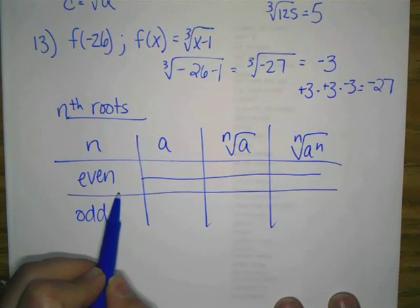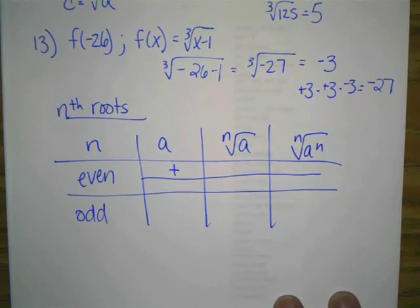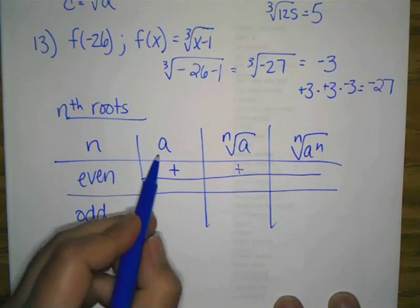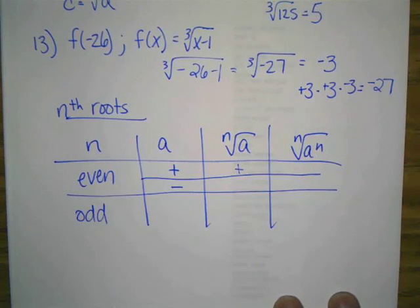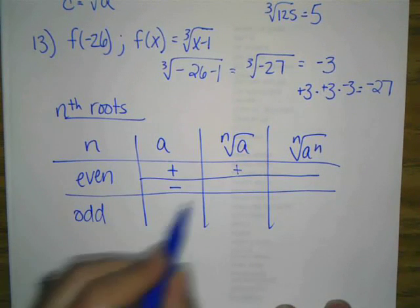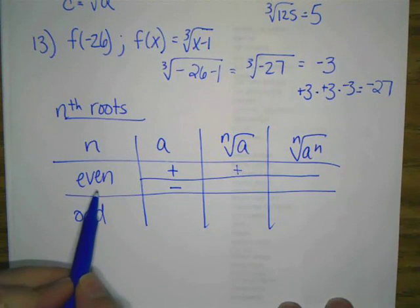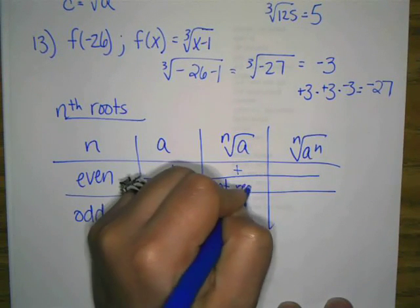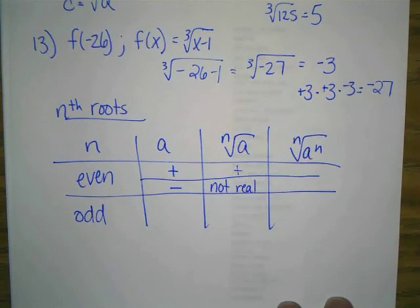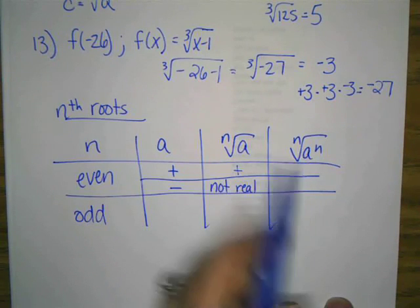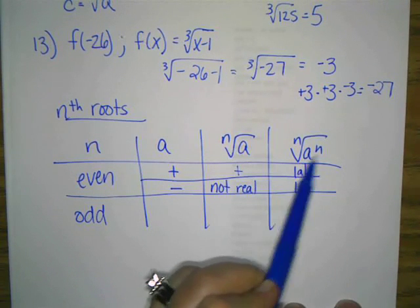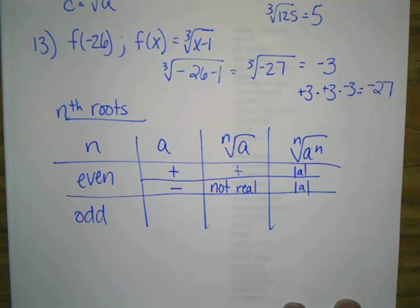So if n is even and a is positive, then the nth root of a is positive. And if a is negative, then the nth root of a, can you take a square root, like a square root of a negative number? No, we can't. It's not real. And with either of these, we end up with the absolute value. Anytime it was even, we said we have the absolute value of a. So the square root of a squared is always positive a.